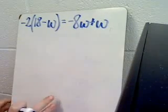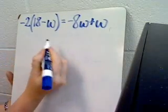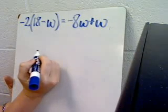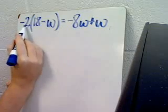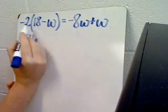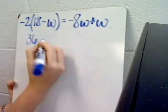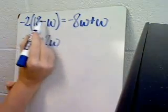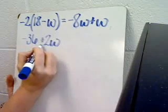Here's another example of a multi-step equation. First, I'm going to eliminate the parentheses using the distributive property to multiply negative 2 times 18, which would give me negative 36, and negative 2 times negative w, which would give me plus 2w, because a negative times a negative is a positive.